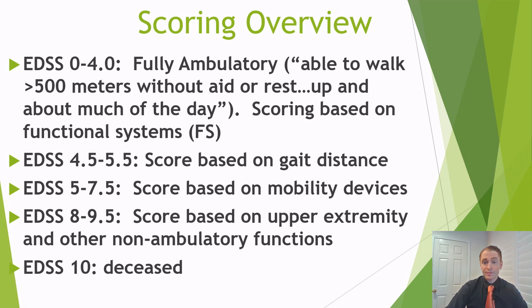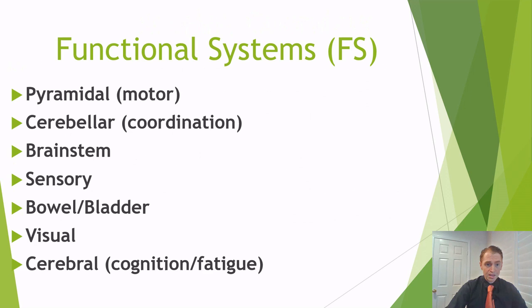From EDSS 4.5 to 5.5, the person is still able to walk but has limited walking distance, and the scoring is based on that distance. From EDSS 6 to 7.5, the EDSS is essentially based on mobility device — what do you need in order to move around? Once you get to EDSS 8, you are really not able to walk, and the scoring is based on function of the arms and other functions. And at EDSS 10, the patient is deceased due to multiple sclerosis.